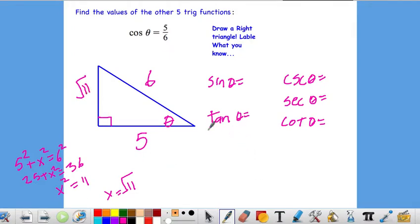So, that means sine of theta is opposite over hypotenuse, which is the square root of 11 over 6. The tangent of theta is the square root of 11 over 5. The cosecant of theta, which is the reciprocal of sine of theta, would be 6 over the square root of 11. But, we know we don't like leaving things in this form. So, we would rationalize the denominator. 6 square roots of 11 over 11. The secant of theta is just the reciprocal of 5, 6, so 6 fifths.